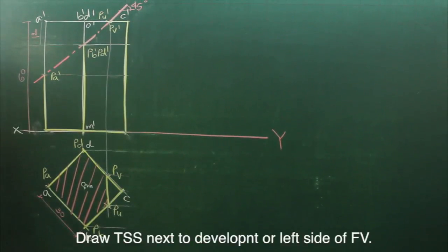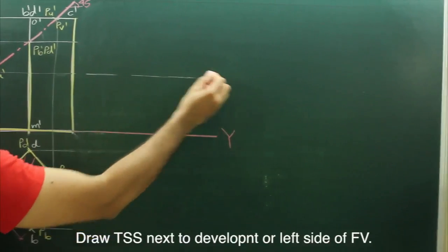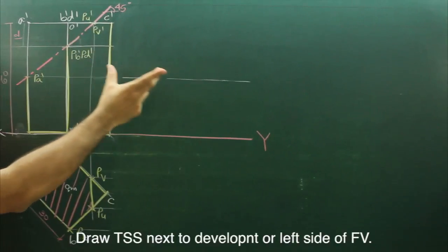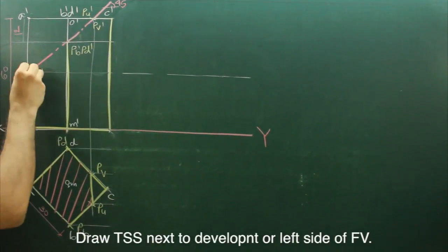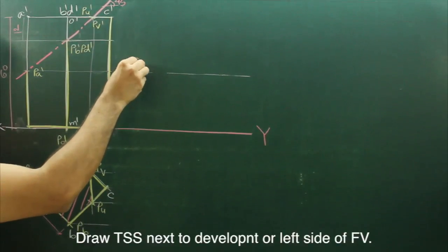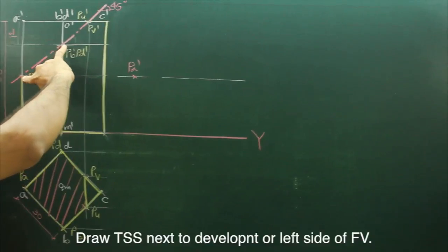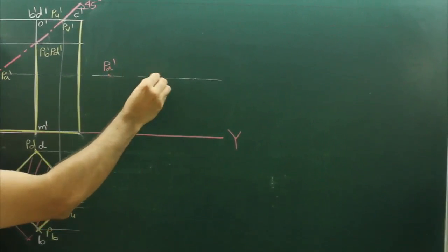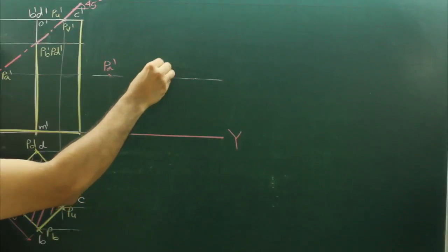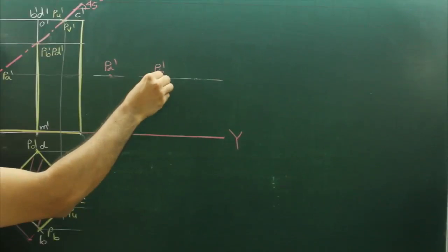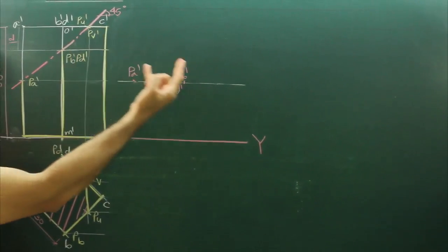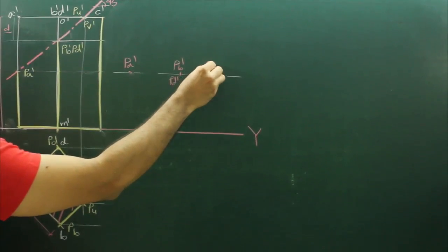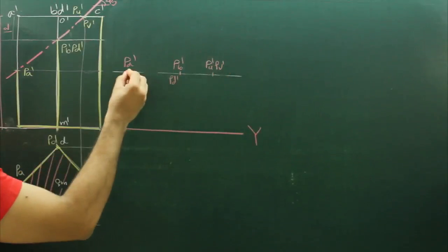Now we will draw true sectional shape. So what we need to do, we need to draw a horizontal line and cut this cutting plane line on it. So we will now point PA prime, we will take this distance, we will cut on this side, that is PB prime and PD prime. Then we will take this distance, we will cut on this, this is PU prime and PV prime.